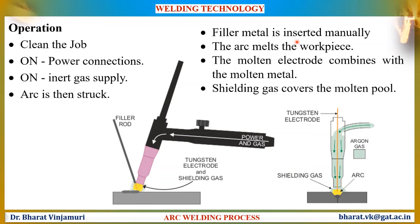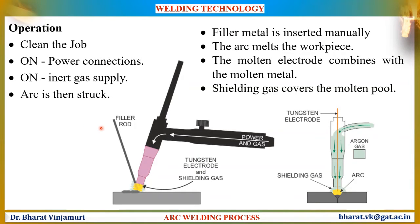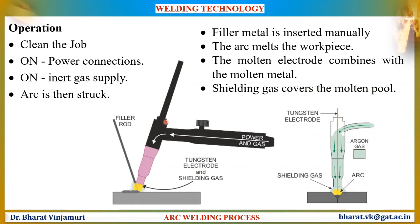The filler metal is inserted manually between the work plates. The arc melts the workpiece along with the filler metal so that the molten filler metal will flow into the gap between the metal plates. Simultaneously, the inert gas will cover the molten pool, thus protecting the entire weld zone from atmospheric contaminations.